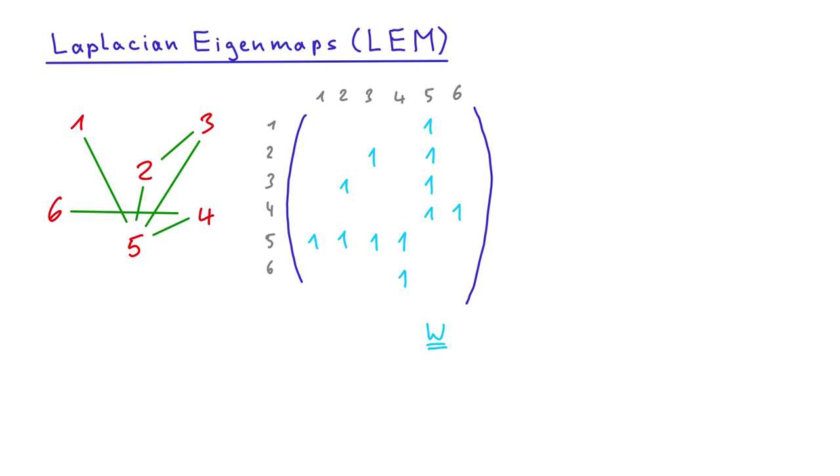Another matrix we need is the degree matrix D. It is a diagonal matrix with a number of edges per node as its values. You can get those values simply by summing over the weight matrix by rows or columns. Node 2, for instance, has two edges while node 5 has four edges.